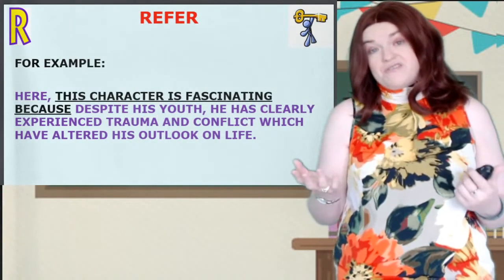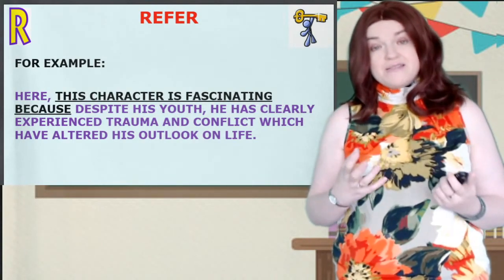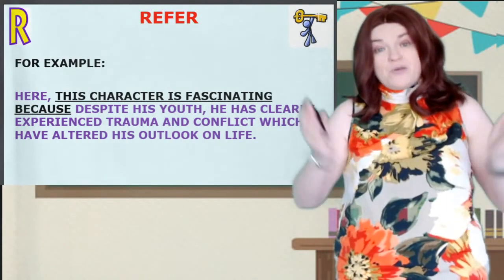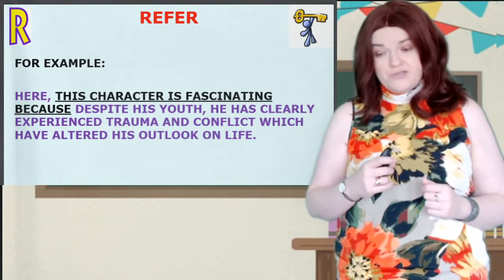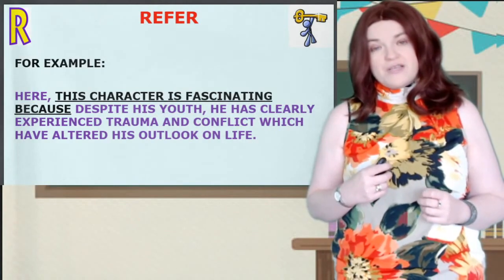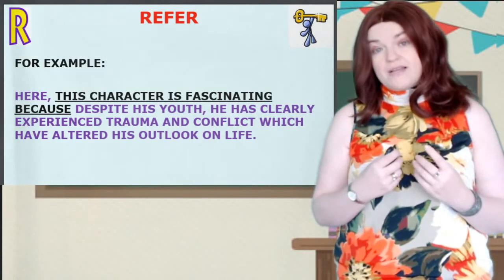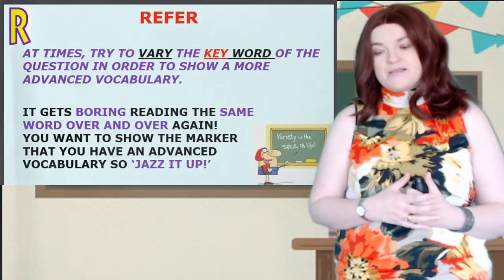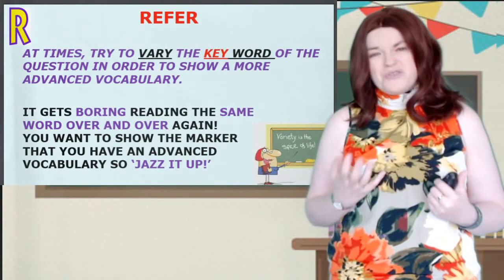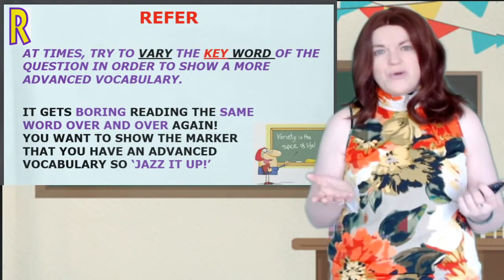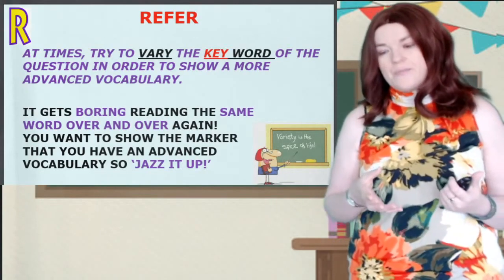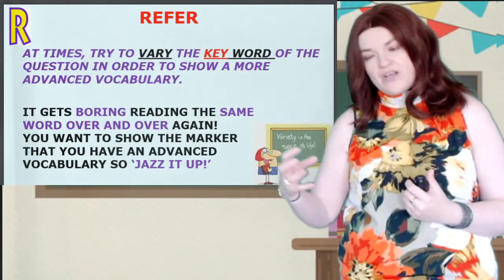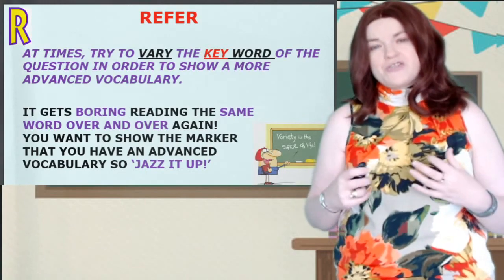So the R is one sentence that sums up how everything you've said is relevant. For example, you could start with 'here' — 'Here, this character is fascinating' — that was the question, so that's why I'm putting it in — 'because, despite his youth, he has clearly experienced trauma and conflict which have altered his outlook on life.' That's the one sentence that tells the marker everything you've said is relevant. At times, though, so we're not seeing the word 'fascinating' twelve times in an essay, try to expand your vocabulary. It does get boring as a teacher and marker to see the same word over and over — it's not fascinating after a while.